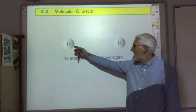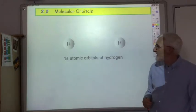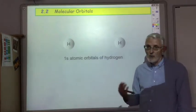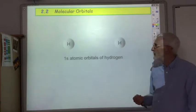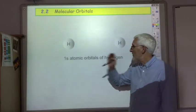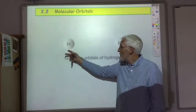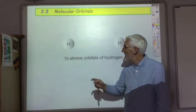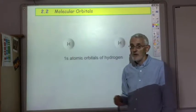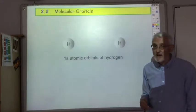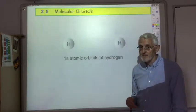Here we see a hydrogen atom. Hydrogen has one electron; it's in a 1s orbital. So the atomic orbital of hydrogen is this 1s orbital, and it represents the area of space where you're likely to find the electron orbiting around the hydrogen nucleus.